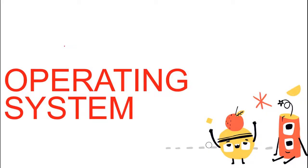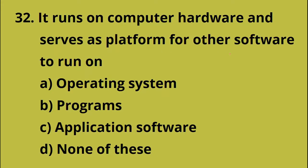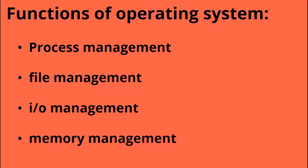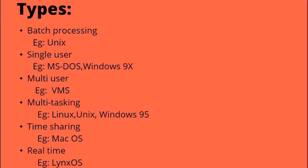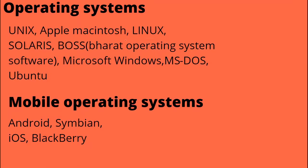Now, some questions on operating systems. An operating system runs on computer hardware and serves as a platform for other software to run on. Functions include: Process Management, File Management, I/O Management, and Memory Management. Types include batch processing, single user, multi-user, multitasking, timesharing, and real-time operating systems.